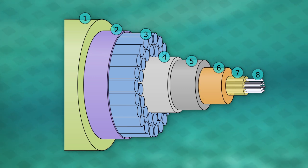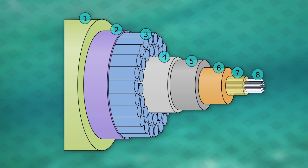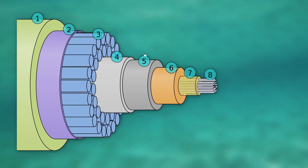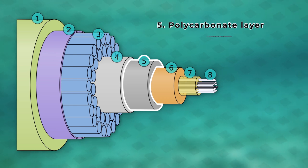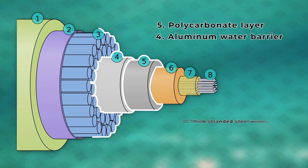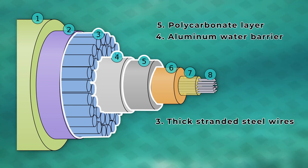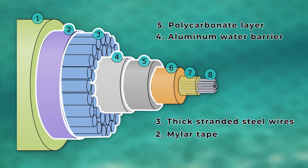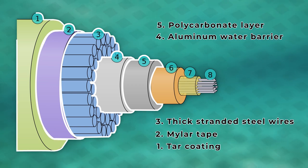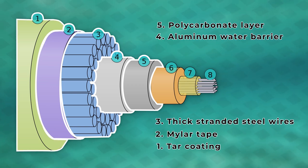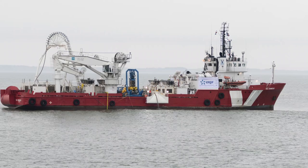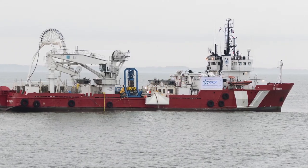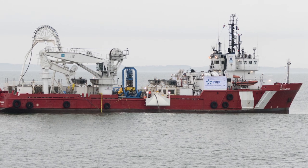After these core layers, the remaining layers are strictly for protection and include the polycarbonate layer, the aluminum water barrier, thick stranded steel wires, a layer of mylar tape, and tar coating for ruggedness and protection.